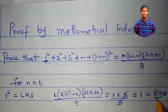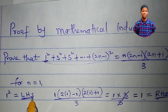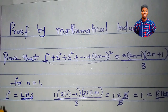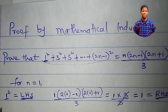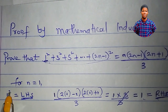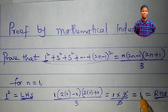The right hand side which is 1 is equal to the left hand side which is 1. So it is true for n equal to 1. Take note: 1 squared is still the same thing as 1.